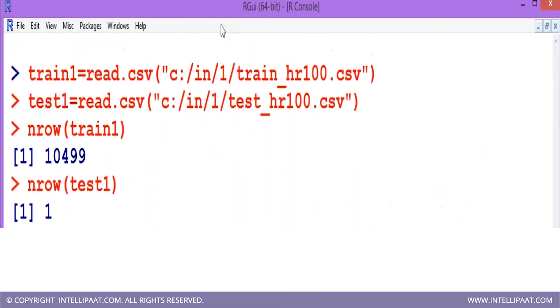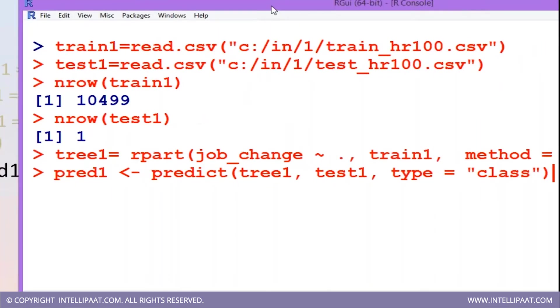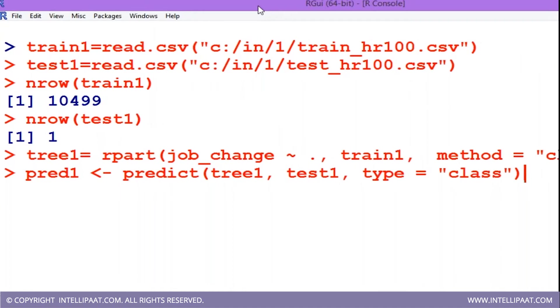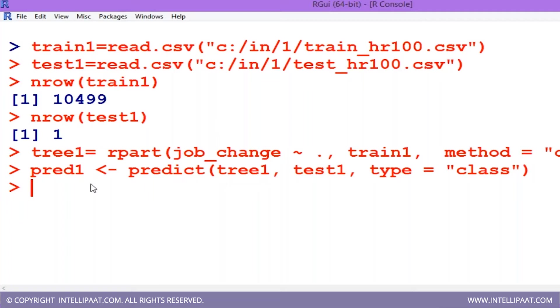And finally, I am able to do the prediction. Now the result will come into a variable called prediction1. Based on this decision tree, the prediction has been made. Let us see what is the prediction. Will this employee leave the company or stay in the company?